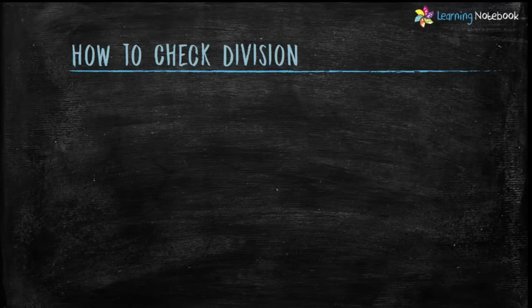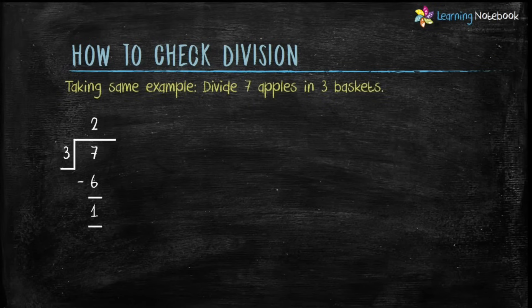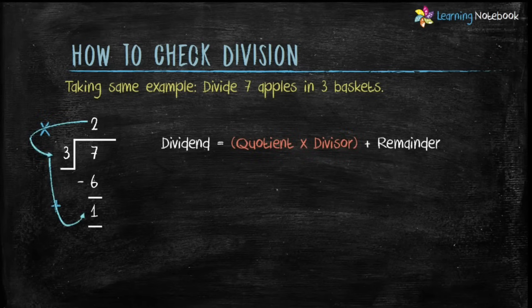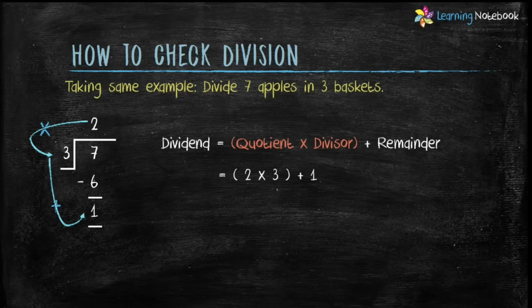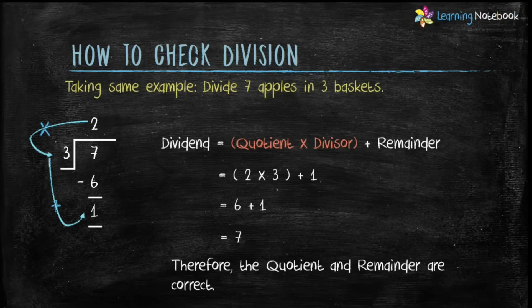Now students, after solving division questions, let's understand how to check whether your answer is correct. Taking the same example, we can check our answer using the equation: dividend = quotient × divisor + remainder. Always do the multiplication part first, then add the remainder. If the result equals the dividend, your answer is correct. So: quotient is 2, divisor is 3, remainder is 1. Therefore, 2 × 3 = 6, and 6 + 1 = 7, which equals the dividend. The quotient and remainder are correct.